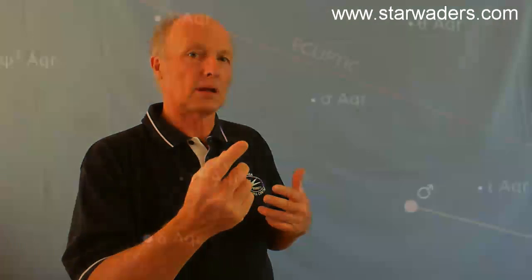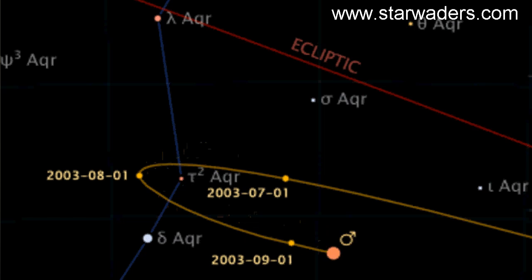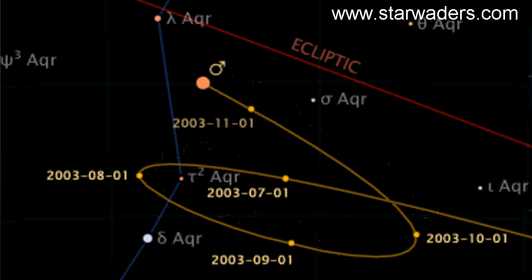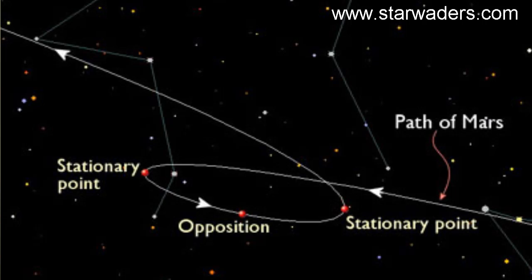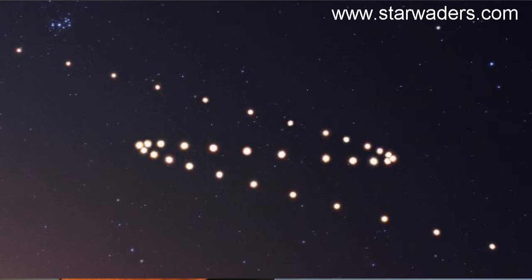Every now and again, what suddenly happens is that a planet suddenly turns around and starts coming back in a westward direction. And then shortly after that it turns forward again, moves again in an easterly direction. This apparent backwards motion, or what we call retrograde motion, puzzled the ancients who had the belief that the Earth was at the center of the solar system. And they had all sorts of models to try and incorporate this retrograde motion.